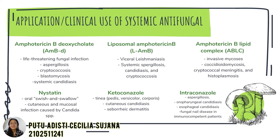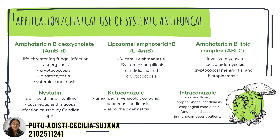My name is Puto Setila Sujana with last three-digit NIM 241. I will explain the applications or clinical use of systemic antifungal. These drugs are used to prevent and treat fungal infections in immunocompromised patients. Currently available applications include: Amphotericin B (AmB), used to treat life-threatening fungal infections, aspergillosis, cryptococcosis, blastomycosis, and systemic candidiasis; LAmB, used to treat visceral leishmaniasis, systemic sporotrichosis, candidiasis, and cryptococcosis; ABLC, used to treat invasive mycosis; and Nystatin, an oral swish-and-swallow drug used to treat oral and cutaneous candidiasis.